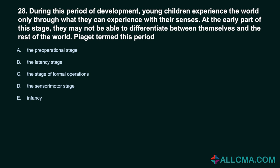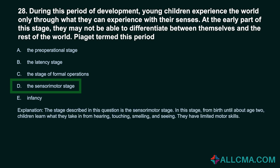Question 28: During this period of development, young children experience the world only through what they can sense, and at the early part of this stage they may not differentiate between themselves and the rest of the world. Piaget termed this period: a) pre-operational stage, b) latency stage, c) stage of formal operations, d) sensorimotor stage, e) infancy. Correct answer: D, the sensorimotor stage. From birth until about age 2, children learn from hearing, touching, smelling, and seeing. They have limited motor skills.